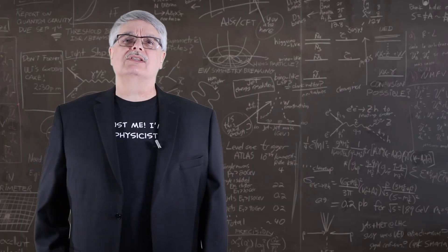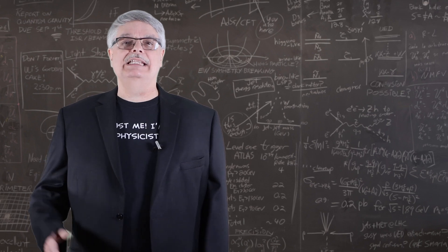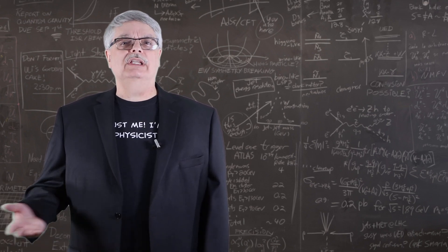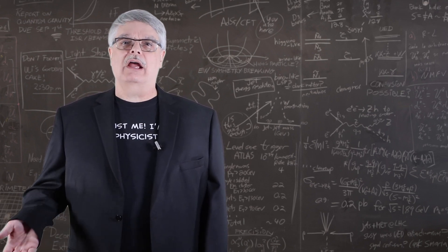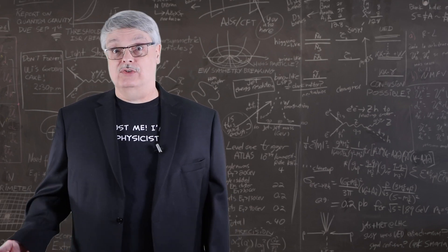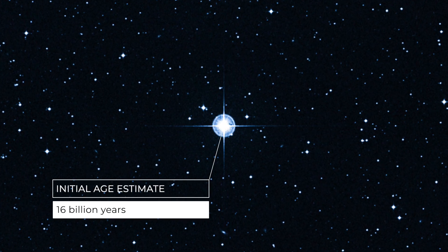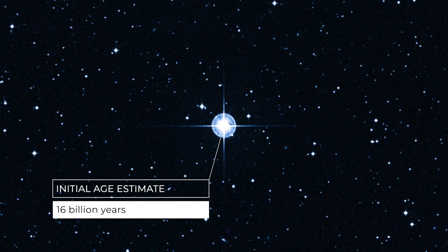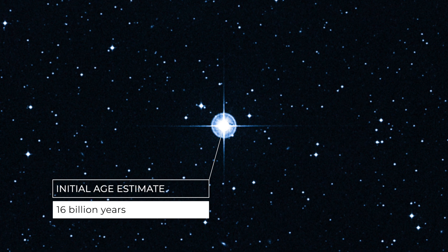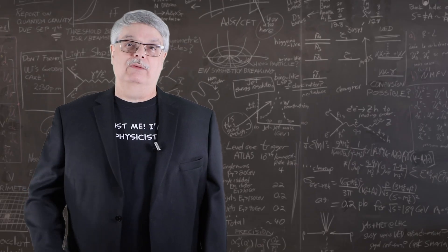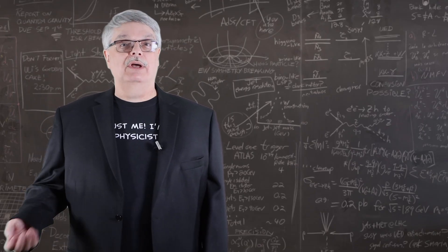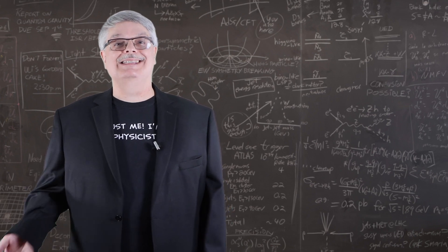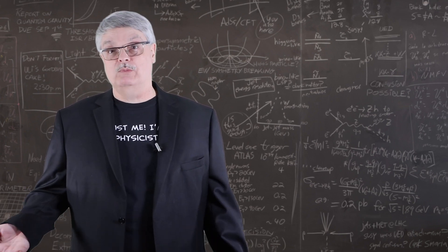The Methuselah star was first studied in 1912, where it was initially noted to be very deficient in iron and, to a lesser degree, oxygen. Earlier measurements of the star's brightness and chemical content led to estimates of the star's age of upward to 16 billion years old. However, over the following century, better and better measurements of the star's distance resulted in better estimates of its brightness.